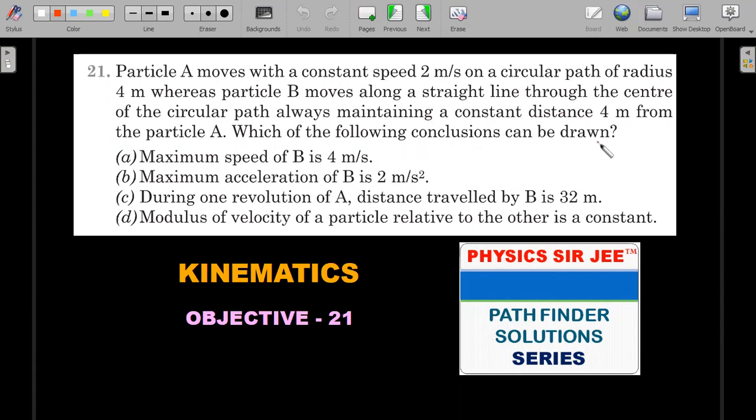Which of the following conclusions can be drawn? More than one may be correct: (a) Maximum speed of B is 4 m/s, (b) Maximum acceleration of B is 2 m/s², (c) During one revolution of A, distance traveled by B is 32 m, and (d) Modulus of velocity of particle relative to the other is a constant. If you want to give it a try, just pause the video here for two or three minutes, have a try, and do come back for the solution.